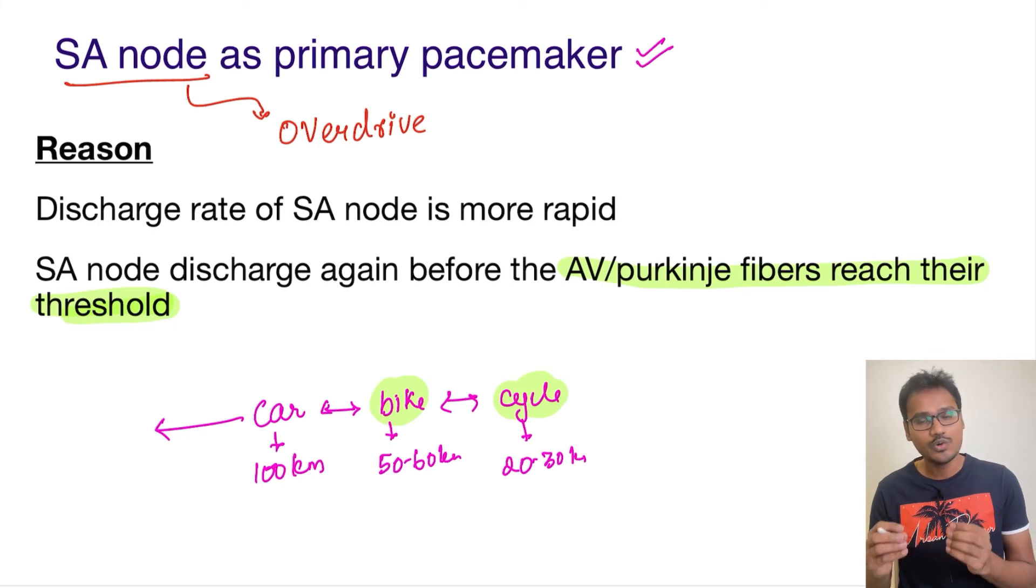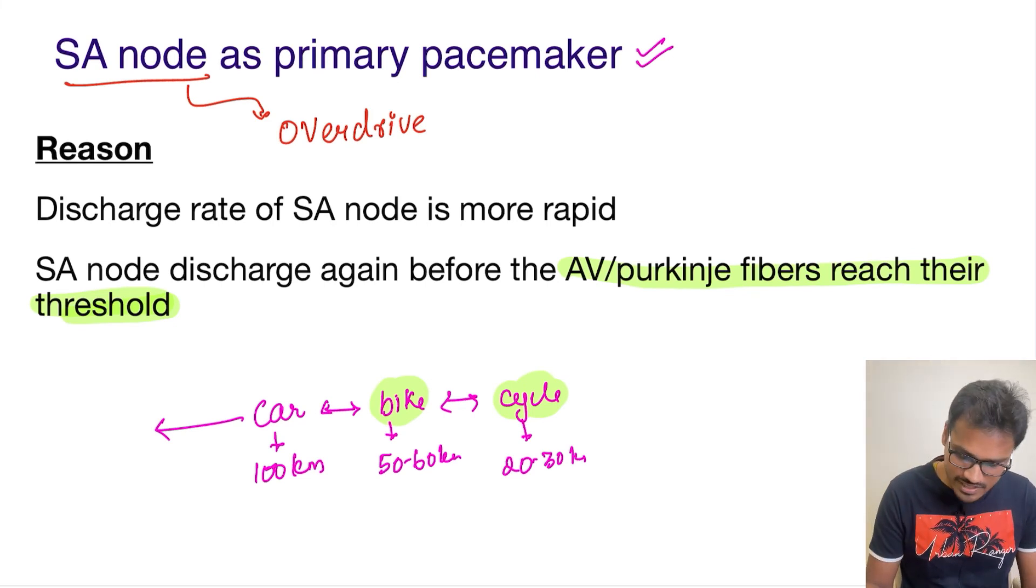And the ventricular musculature—even the ventricular musculature—has its own intrinsic rate, but all of them are suppressed by the SA node because of the rapid discharge, and it is called overdrive suppression. I hope it's clear. Thank you for listening. Subscribe to the channel for more such videos. Thank you so much.